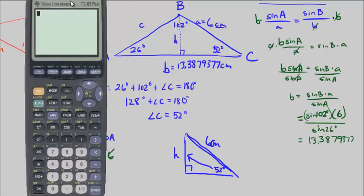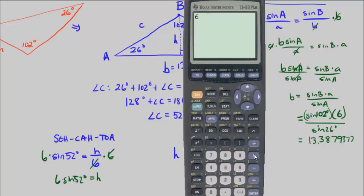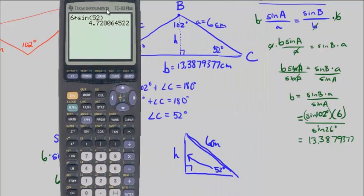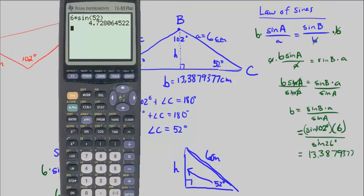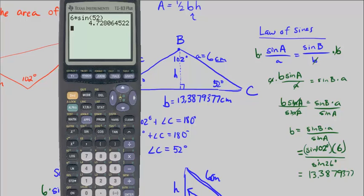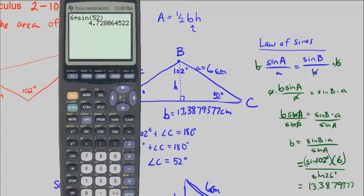Let's use our calculator to go ahead and get that. 6 times sine of 52 degrees, I know is now H is 4.728064522. Finally I can use the height now, because that's the same H here, to go ahead and find the area of my triangle, which is what I'm trying to do in the first place.